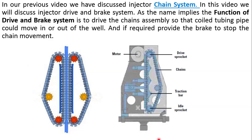The drive and brake system drives the chains so that the coil tubing pipe can ultimately be run in or out of the wellbore. The second function of the drive and brake system is to provide a braking mechanism, so that when we need to stop the movement of the coil tubing pipe, we can apply the brake and stop its movement.